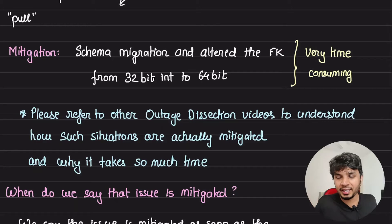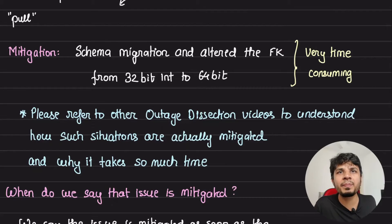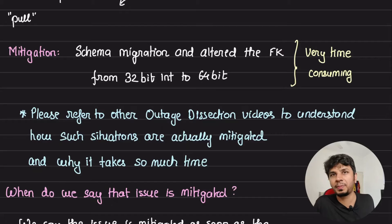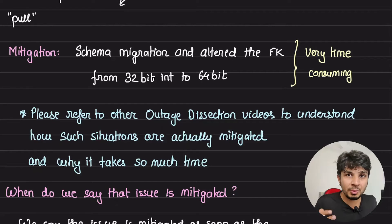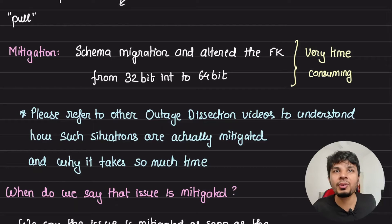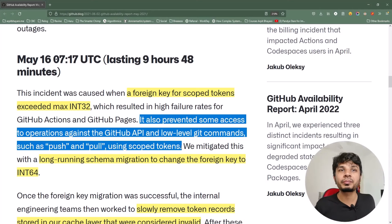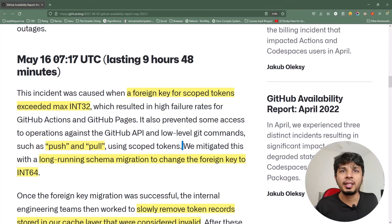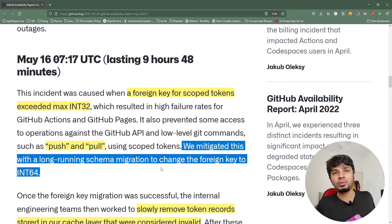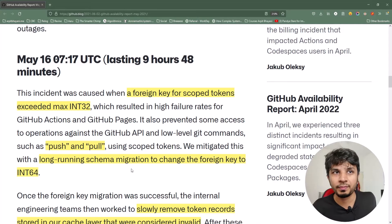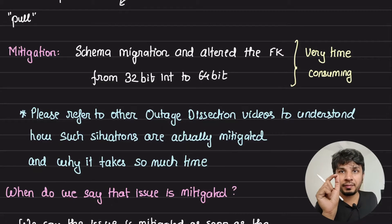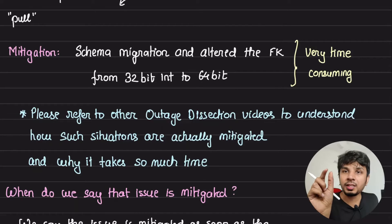So how do we mitigate this? If we know we're hitting the limit very soon, the mitigation strategy is straightforward: run a schema migration to convert a 32-bit column to a 64-bit column. This is very time-consuming because there would be far too many rows, but in general you have to do it — there is no way out. And this is exactly what GitHub also did: a long-running schema migration to change the foreign key to int 64.